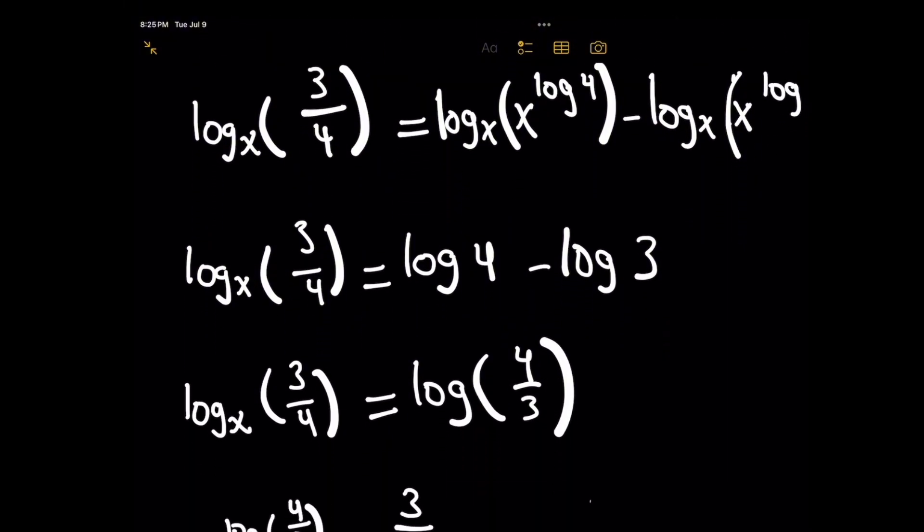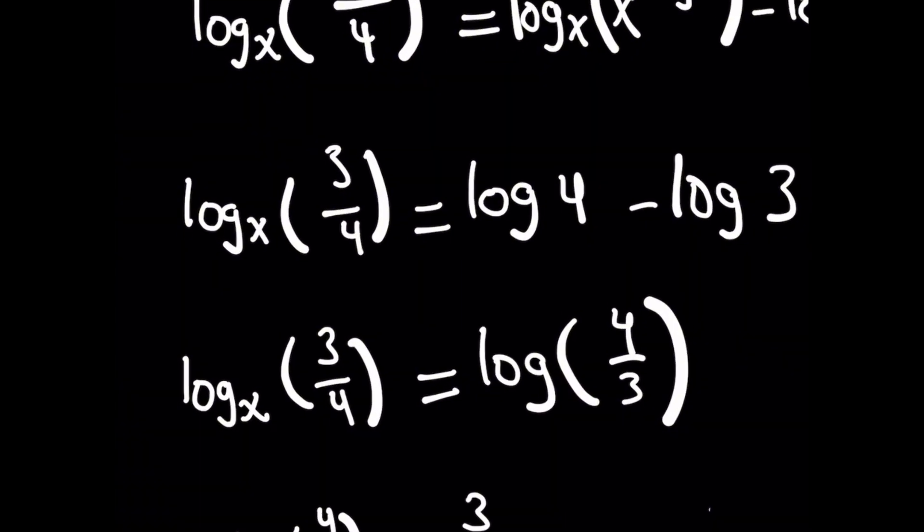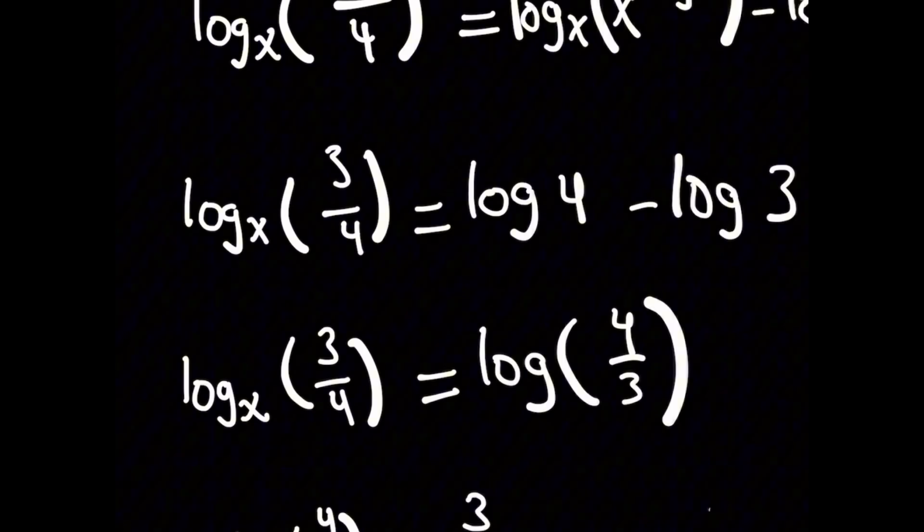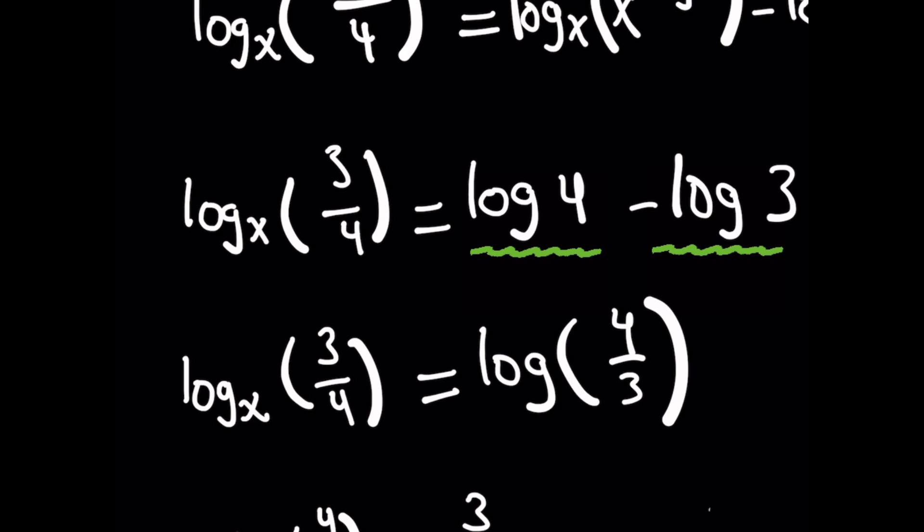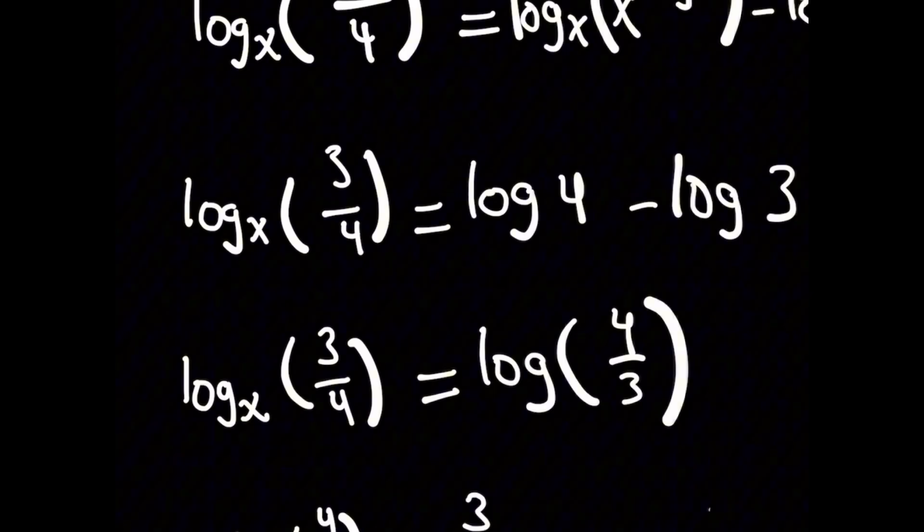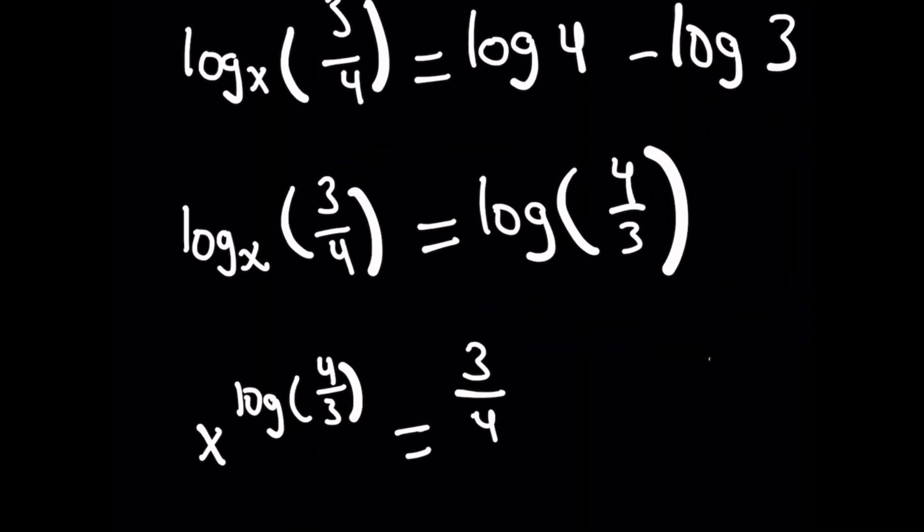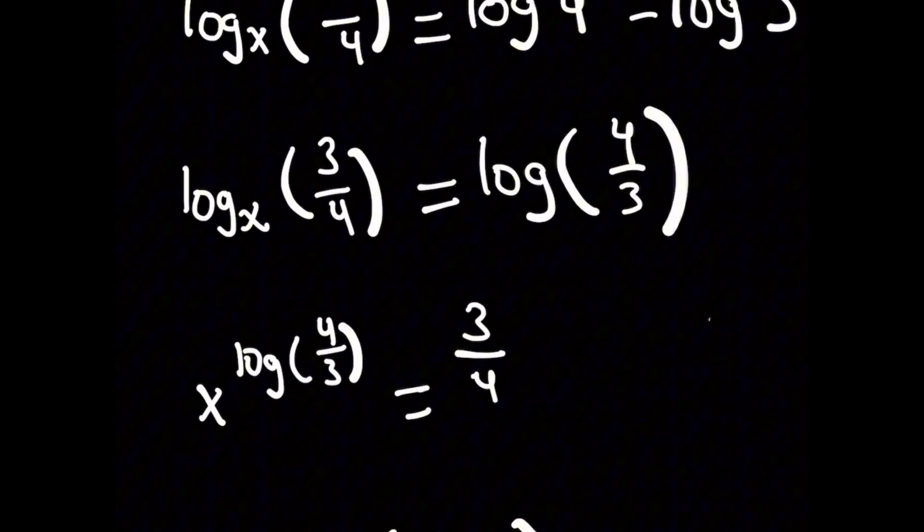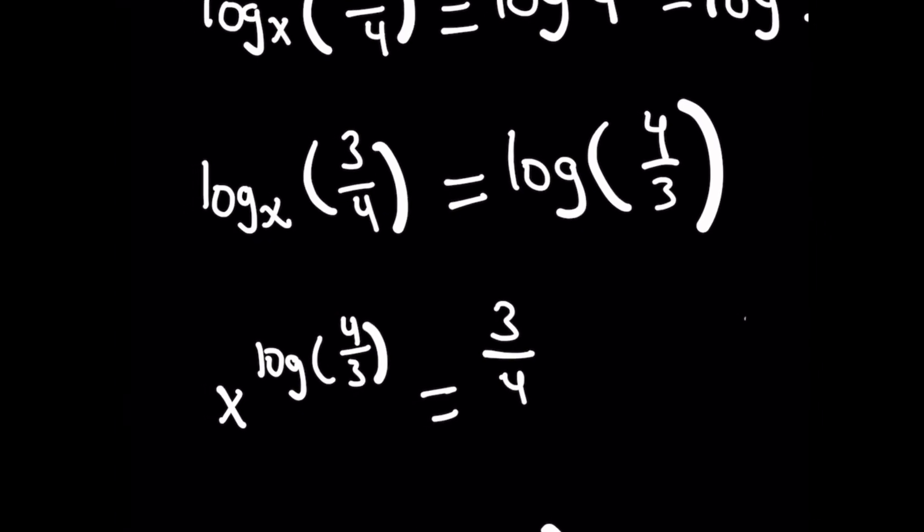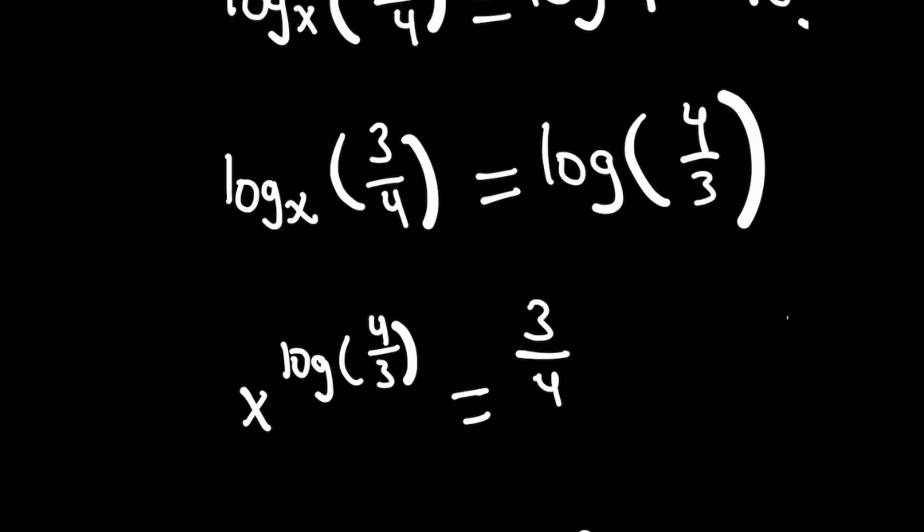Moving on, we're going to have log base x of 3 fourths equals log of 4 over 3. I'm doing the reverse of what we did above. Instead of splitting a log of a fraction, I'm remembering that log of A minus log of B gives you log of A over B. Now when I use this idea of exponents and logs, x raised to log of 4 over 3 equals 3 over 4.